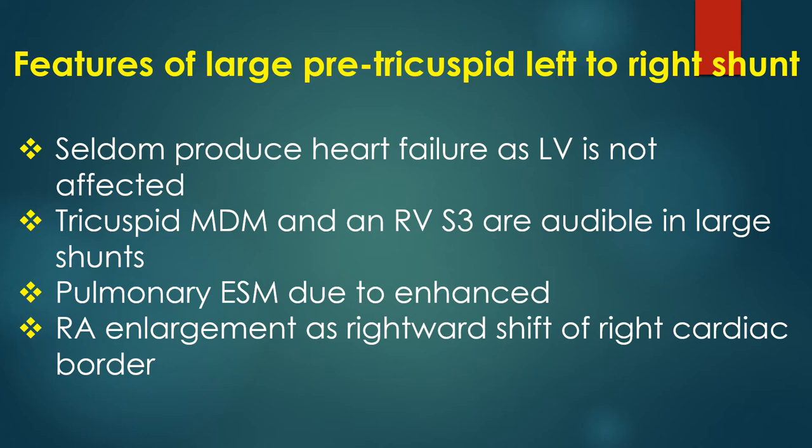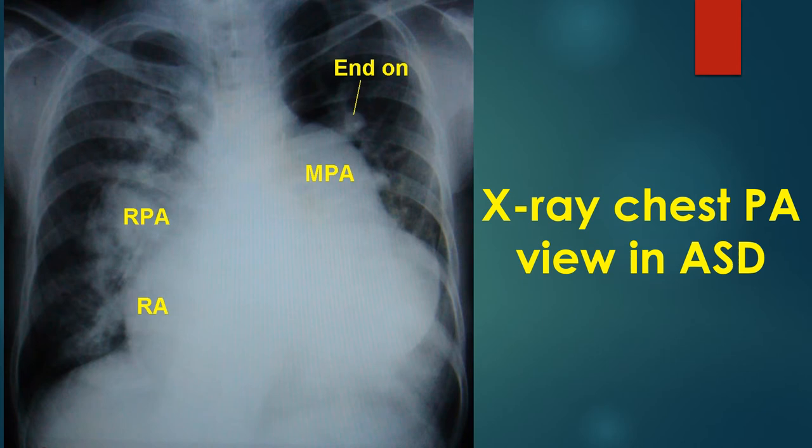RA enlargement may be recognizable clinically by the rightward enlargement of the right cardiac border. Here is a chest X-ray PA view in ASD with large left to right shunt, showing enlargement of the right atrium, main and right pulmonary arteries. Left pulmonary artery shadow is behind the cardiac silhouette. Branch pulmonary vessels are enlarged and end-on views are seen. Right ventricular type of upturned apex is visible.